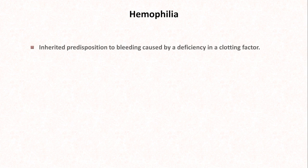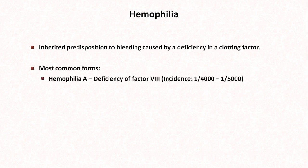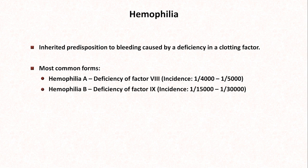Now let's discuss some coagulation deficiencies, and the most significant of these is hemophilia. Hemophilia is an inherited predisposition to bleeding caused by a deficiency in a clotting factor. The most common forms are hemophilia A, which is a deficiency of factor VIII, and hemophilia B, a deficiency of factor IX. They are indistinguishable without lab tests.